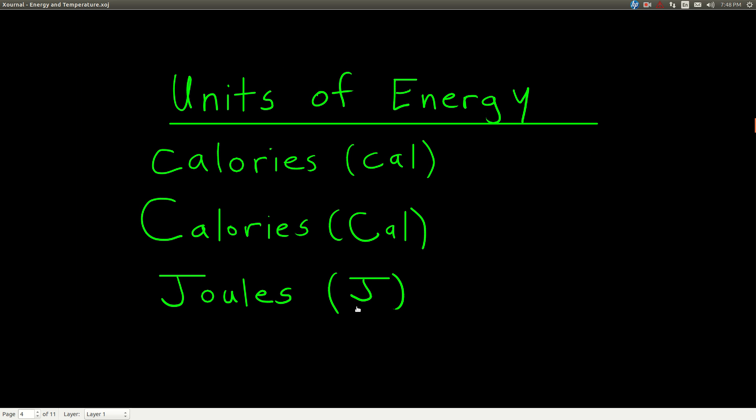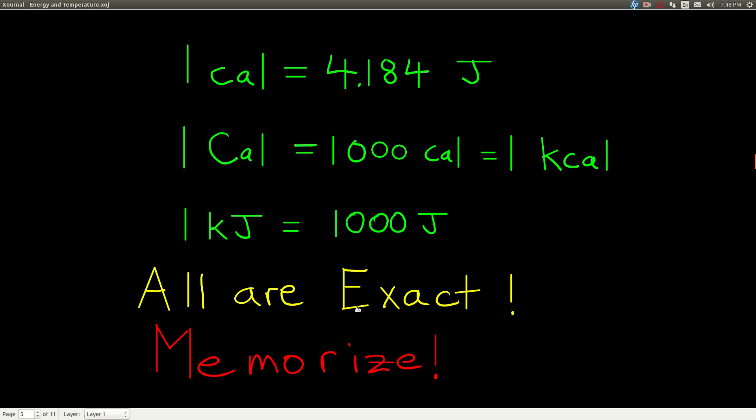You should know the names and the symbols. And now this is important, you need to know how to convert between different units of energy. And the top one here is kind of the key to all this. One calorie is equal to 4.184 joules. All of these conversions, by the way, are exact, meaning an infinite number of sig figs. They will not limit your significant figures in a calculation. So remember, one calorie is equal to 4.184 joules, exactly. A big calorie, or a nutritional calorie, is exactly 1,000 little calories, which is the same as a kilocalorie. Remember, the prefix k stands for kilo, and that means times 10 to the third, or 1,000. And of course, one kilojoule is 1,000 joules, because kilo means 1,000. So memorize these guys. We're going to use them.